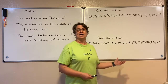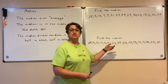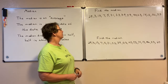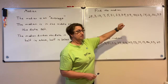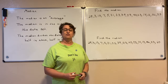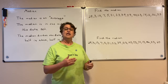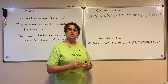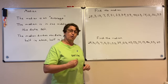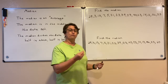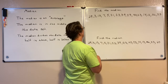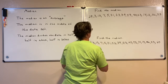Let's find that center number of this data set. We have a bunch of numbers here, and the first thing we're going to do in order to find the median is we need to put them in order from smallest number to largest number, or from largest to smallest. It doesn't matter as long as we put it in order.